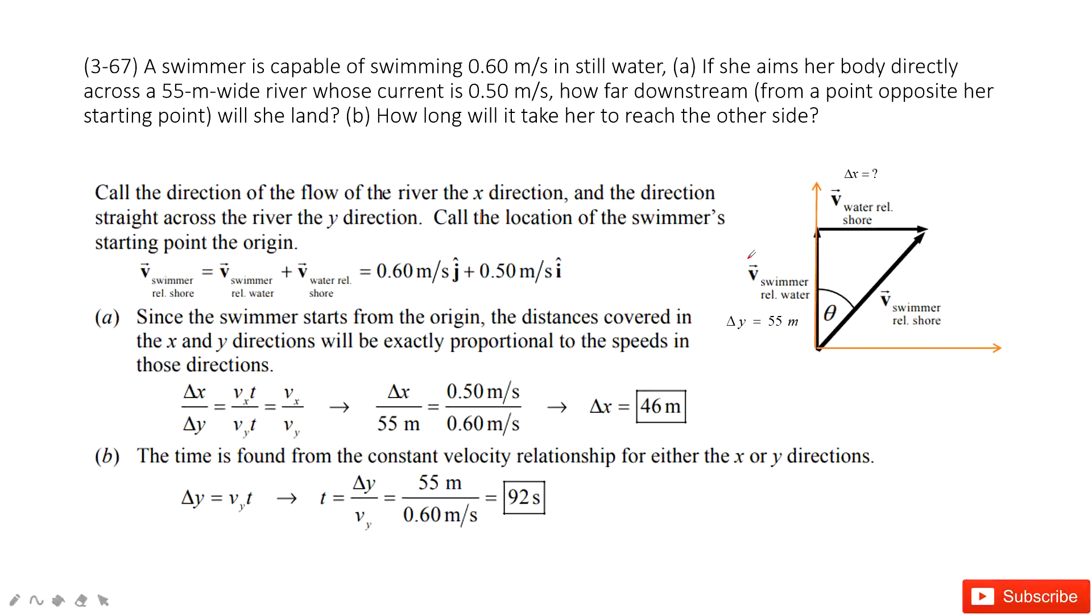This is still a river crossing problem. We can see they tell us there is a swimmer, a person who swims in the water. We know the velocity of the swimmer relative to the water, and also the velocity of the water relative to the shore.